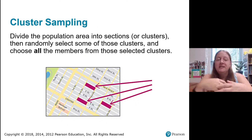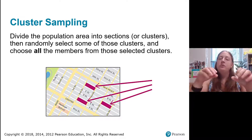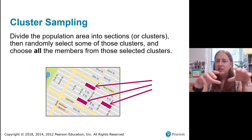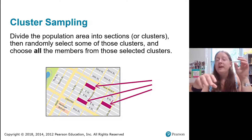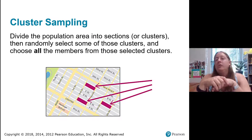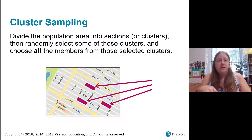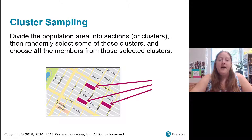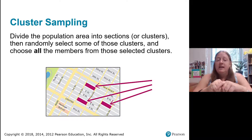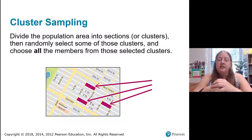Another type of sampling is cluster sampling. You divide an area up into sections or clusters, randomly select which clusters you're going to use, and then choose all of the members of those clusters. For example, you might break a school up into all of its classrooms, randomly select a couple classrooms, and survey all of the students in those classrooms. Or on a city map, you might randomly select three blocks and then go door to door surveying every single person on those blocks.